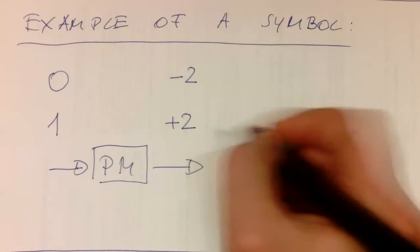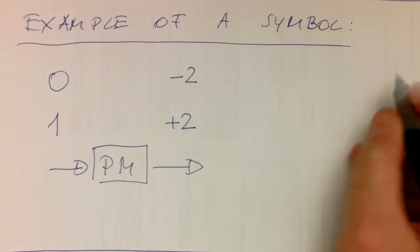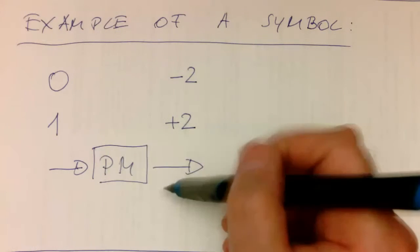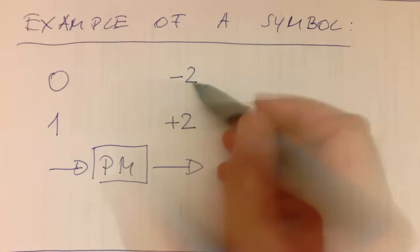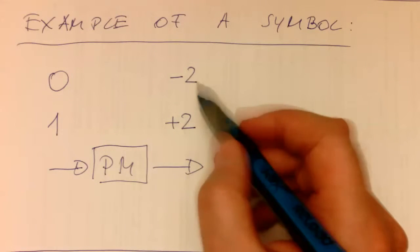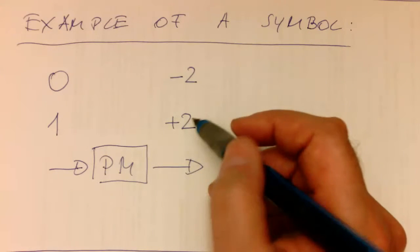On the receiver side, the receiver knows that the plus two is one and the minus two is a zero. This could be interpreted as volts, if this were transmitted via transmission line.